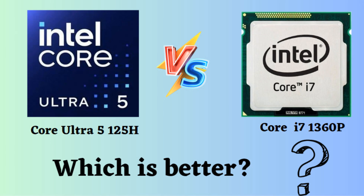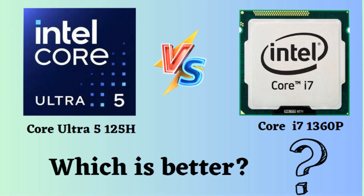In this video, I will compare the Intel Core Ultra 5 125H and Intel Core i7-1360P, highlighting their differences, and then provide a conclusion to help you determine which one is the better choice.